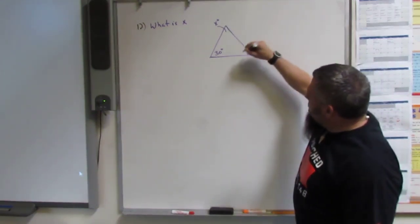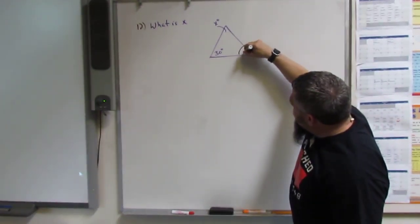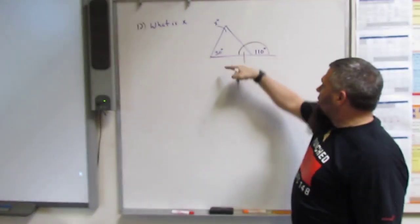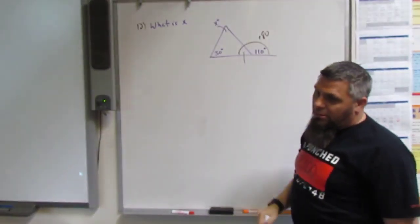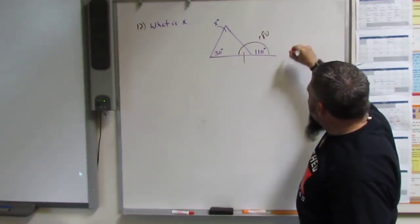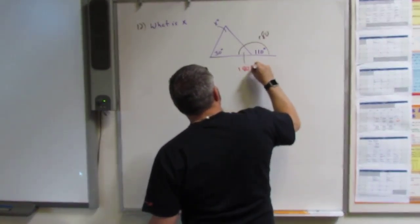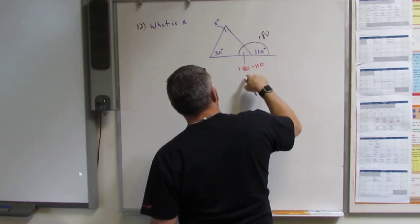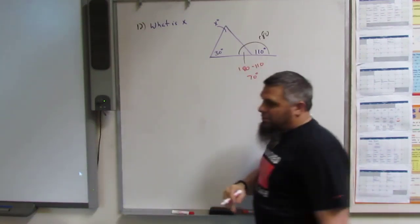First I need to figure out what this is. So the whole thing is 180. So that makes this 180 minus 110, right? And that is 70.